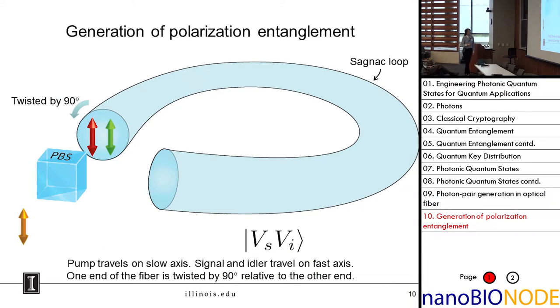The next step is to generate an entangled state. In the previous slide, I generated a pair of photons, but they were both in the same polarization state - for example, they are both vertical. What we want is a state HH plus VV. In order to produce that, I'm going to take the fiber and put it in what's called a Sagnac loop configuration.